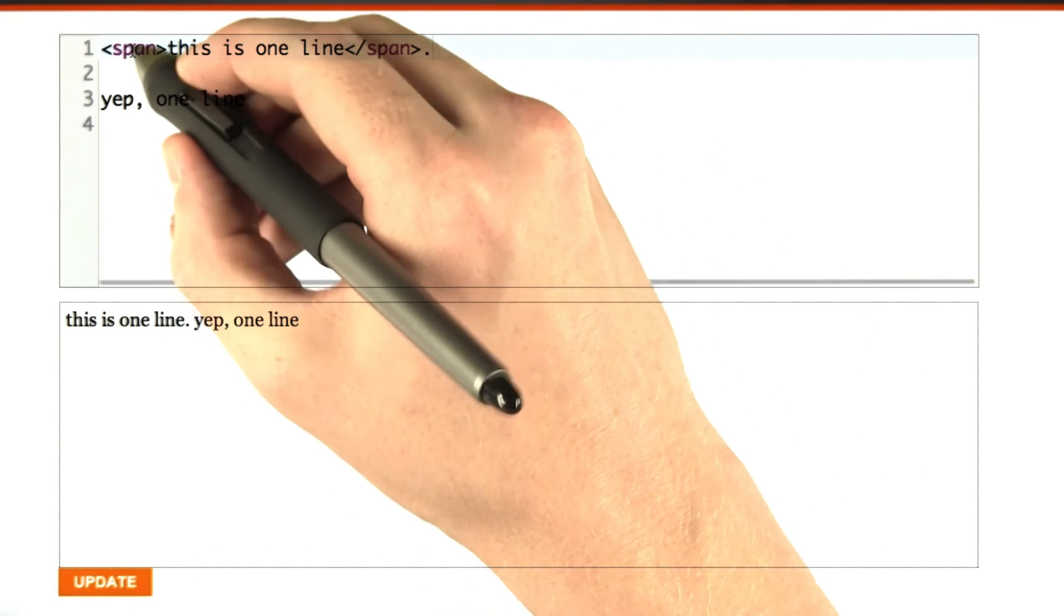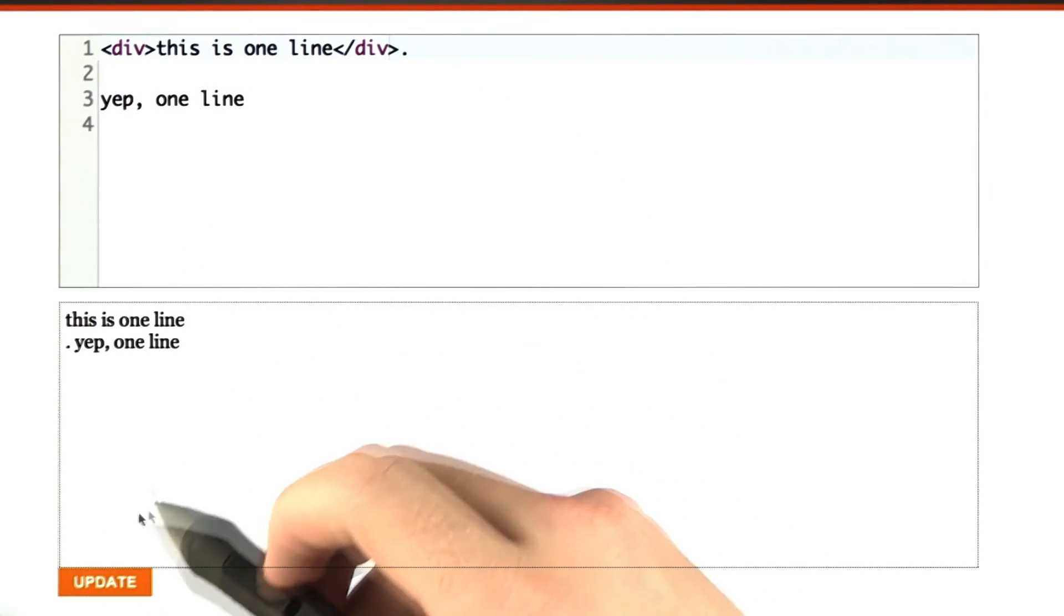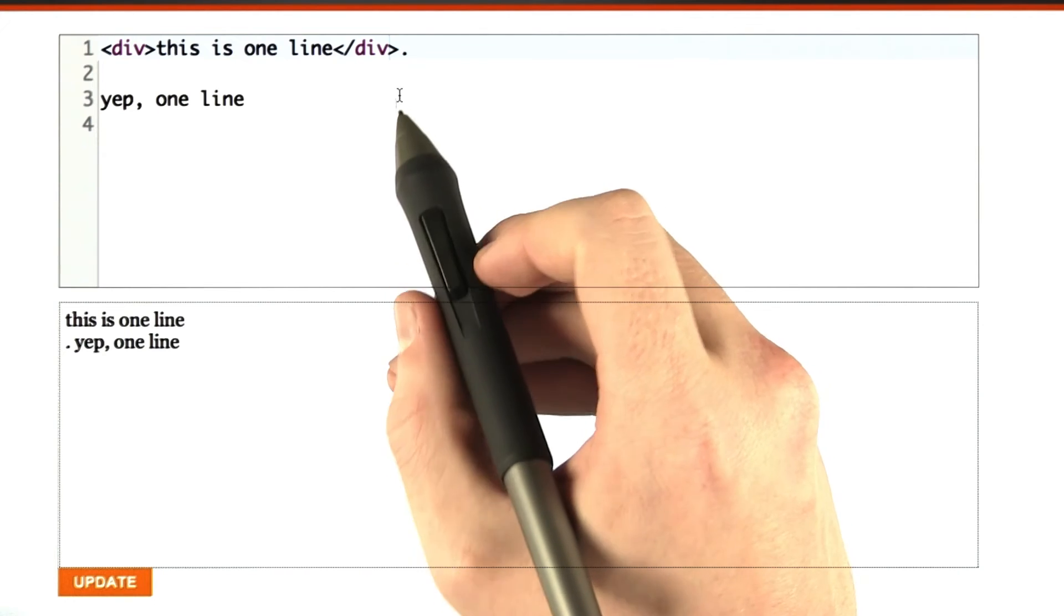Now, if I were to change the span to a div, it behaves more like how the paragraph tag before behaved.